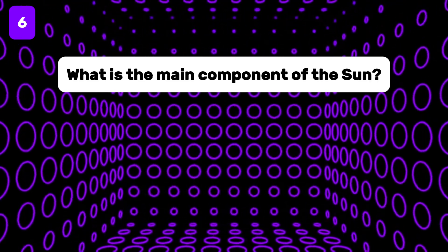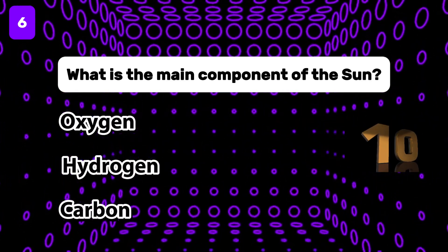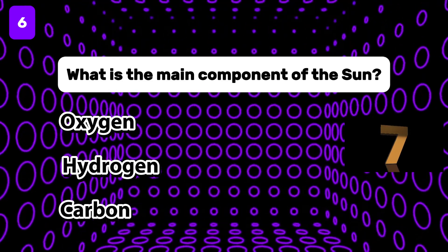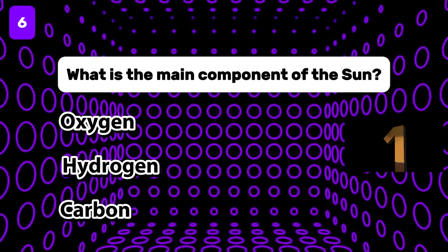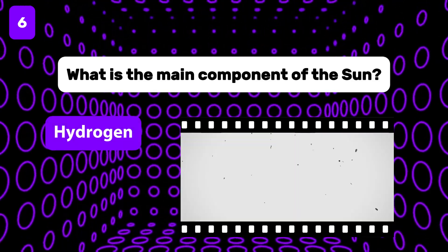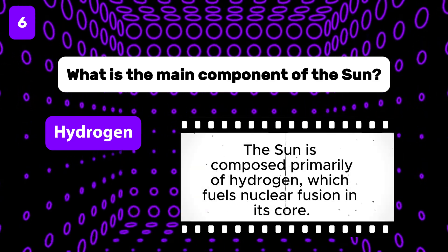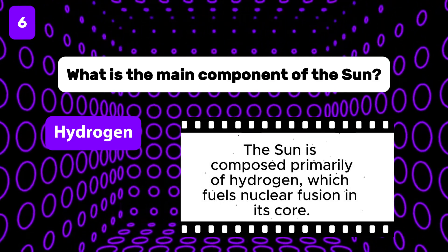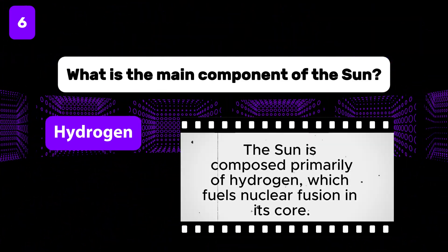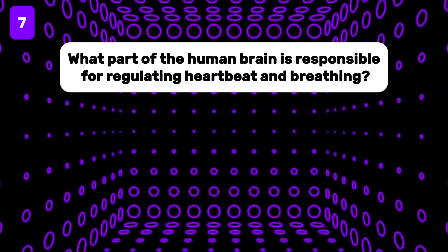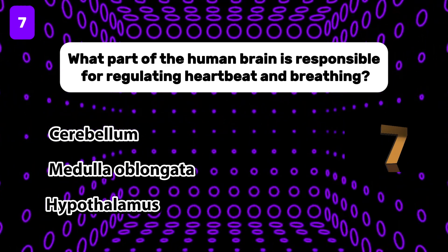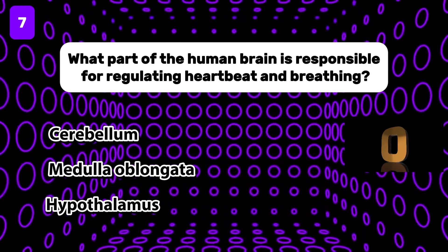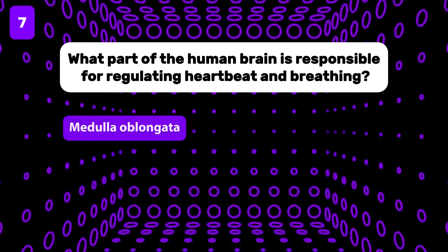What is the main component of the Sun? What part of the human brain is responsible for regulating heartbeat and breathing? The answer is medulla oblongata.